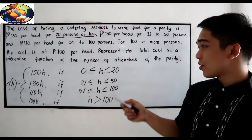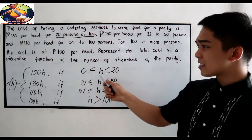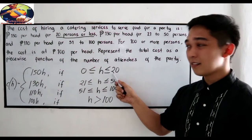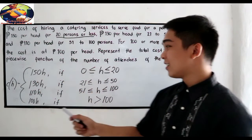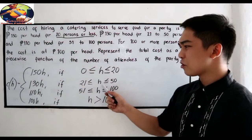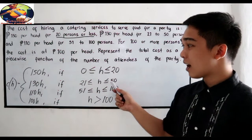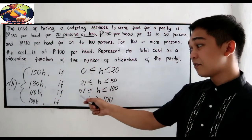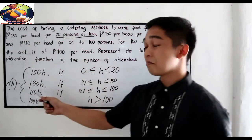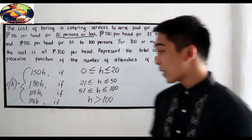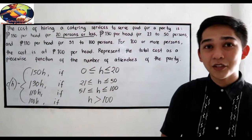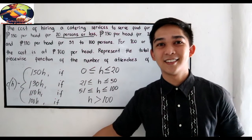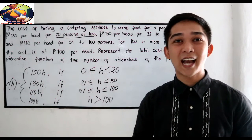Pwede nating i-check: kapag ang attendees natin ay 0 hanggang 20, ang babayaran ay 150 per head. Kapag ang attendees ay 21 to 50, ang babayaran ay 130 per head. Kapag ang attendees ay 51 to 100, ang babayaran ay 110. Pero kapag greater than 100, ang babayaran ay 100 per head. Ganyan ang mag-represent ng ating piecewise function.